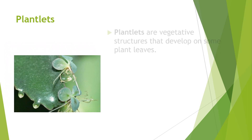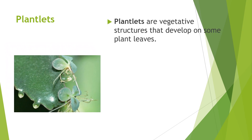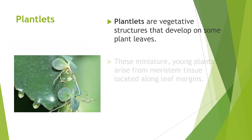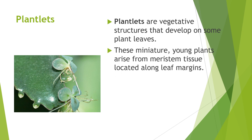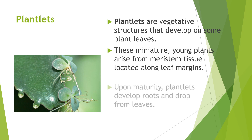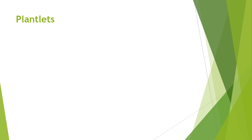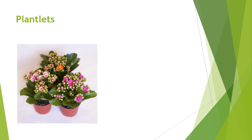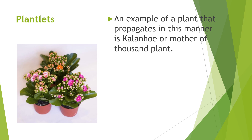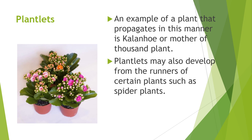Plantlets are vegetative structures that develop on some plant leaves. These miniature young plants arise from meristem tissue located along leaf margins. Upon maturity, plantlets develop roots and drop from leaves, taking root in the soil to form new plants. An example of a plant that propagates in this manner is Kalanchoe, or the Mother of Thousands plant. Plantlets may also develop from the runners of certain plants such as spider plants.